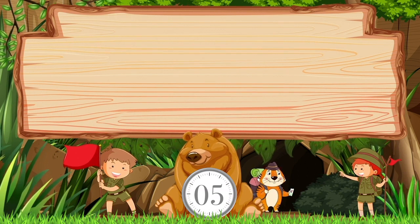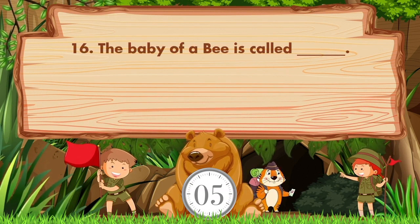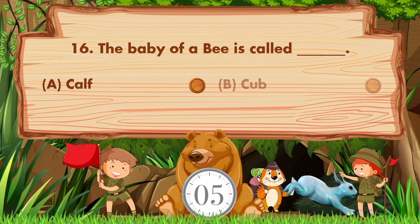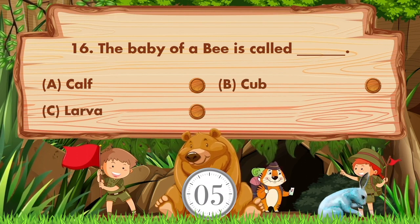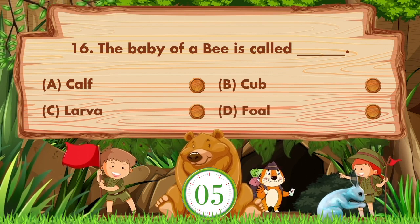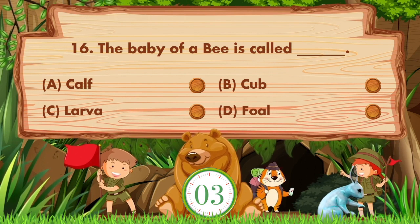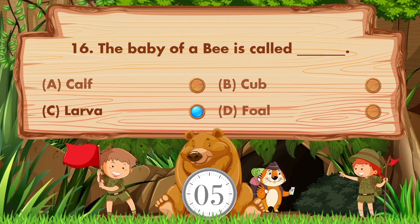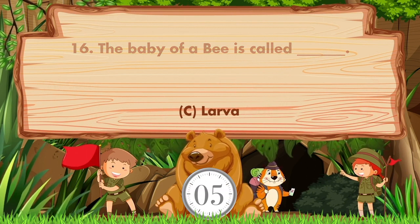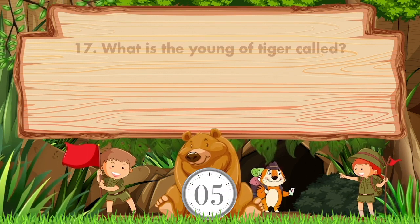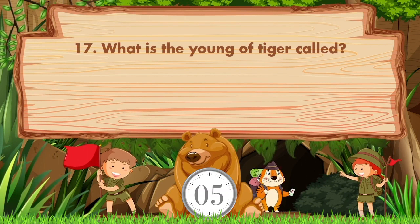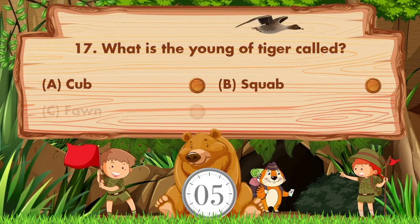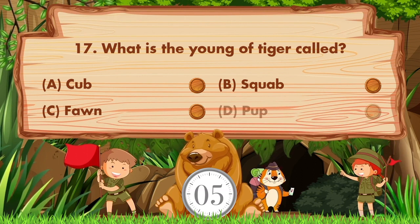The baby of a bee is called blank. Option A calf, B cub, C larva, D foal. Answer is option C, larva. What is the young of a tiger called? Option A cub, B squab, C fawn, D pup.